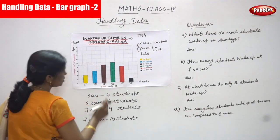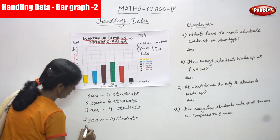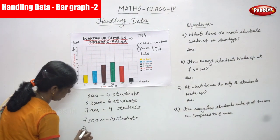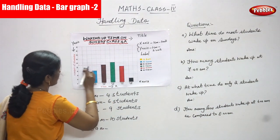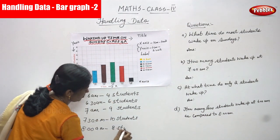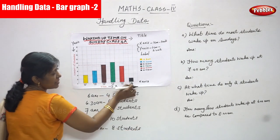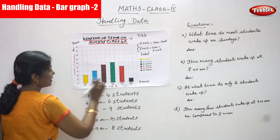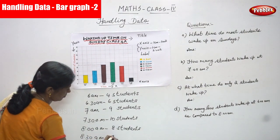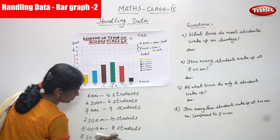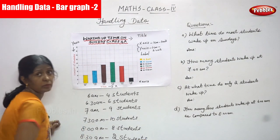Next one is 8 a.m. How many students wake up at 8 o'clock? That is 8 students. And 8:30 a.m. — how many students wake up at 8:30 a.m.? That is 2 students.